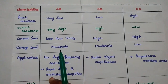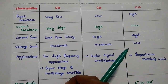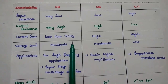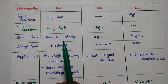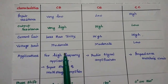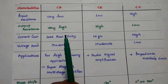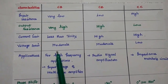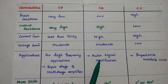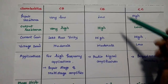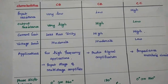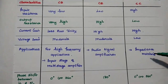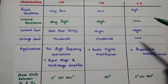The voltage gain is moderate for both common base and common emitter, and low for common collector. Based on these characteristics, each configuration suits particular applications. Common base is widely used for high frequency applications due to its very low input resistance and very high output resistance, making it suitable as an input stage amplifier. Common emitter is widely used for audio signal amplification due to its low input resistance and high output resistance. Common collector is widely used in impedance matching circuits due to its high input resistance and low output resistance.